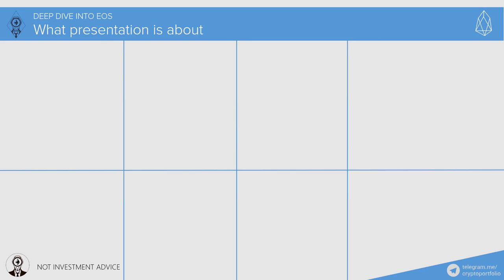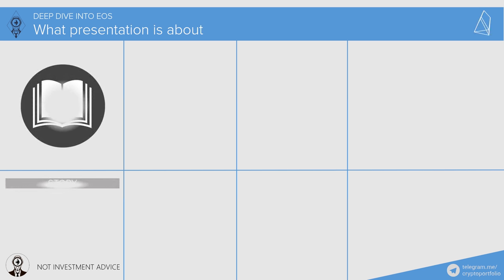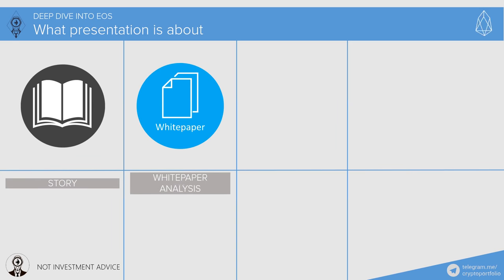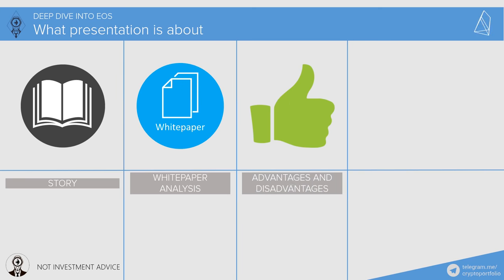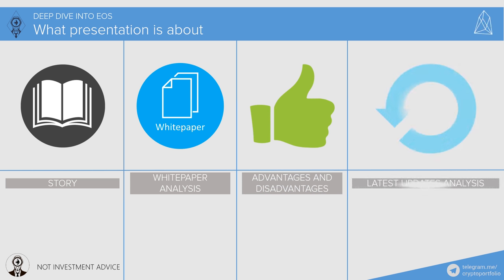Good day everyone! In this presentation, we will start with the story of the project — how exactly it was introduced to the world. Then the largest part: 10 slides of white paper analysis. Third, we will cover the main criticism of EOS and its advantages. At the end, we will check how EOS was able to deliver on its promises and what the team has achieved so far.